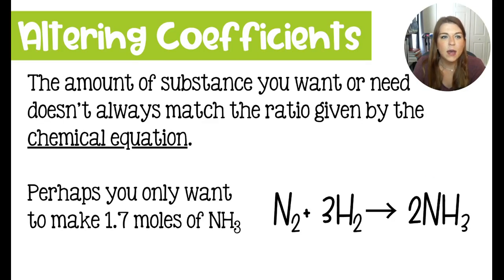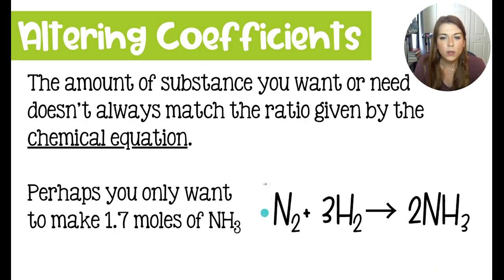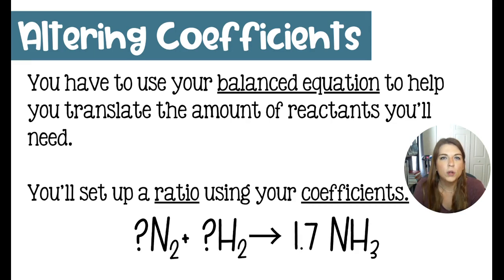Now, the amount of substance that we need doesn't always match up to this ratio from the chemical equation. If we had this reaction, but instead of wanting to make two moles of ammonia, we only wanted to make 1.7, we would have to adjust the coefficients of everything else to keep in line with that ratio. In order to do this, of course, we would need a balanced chemical equation. If you need some help with that, I will link that video in the description below.